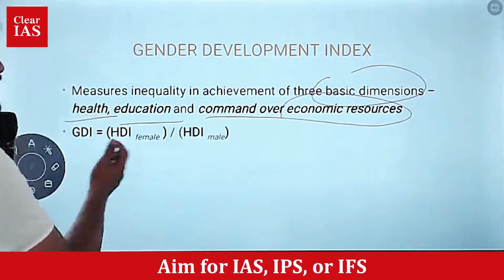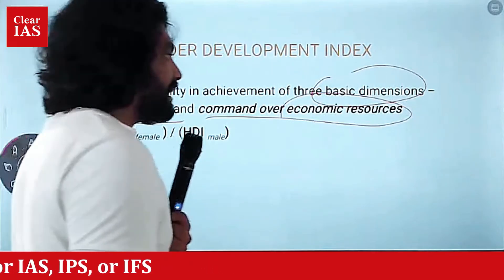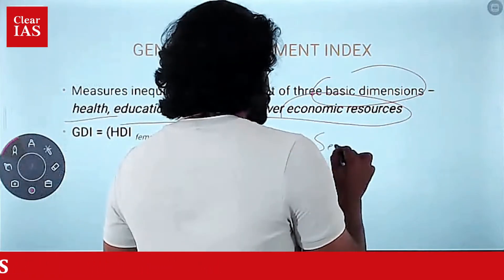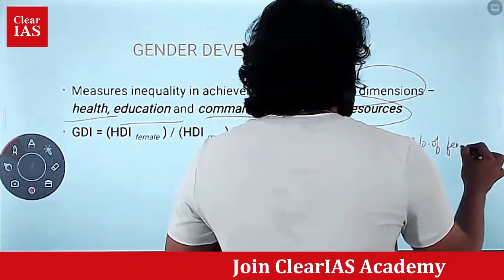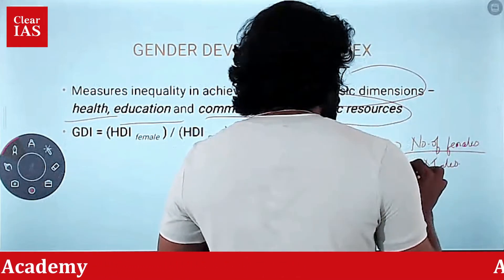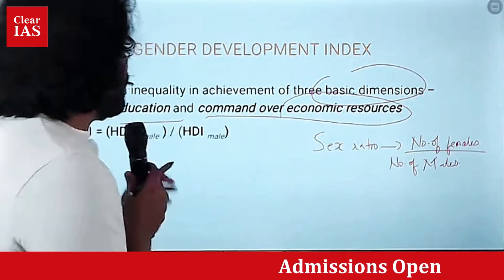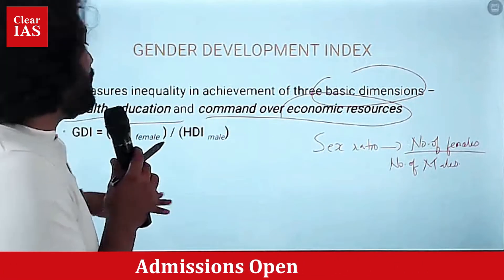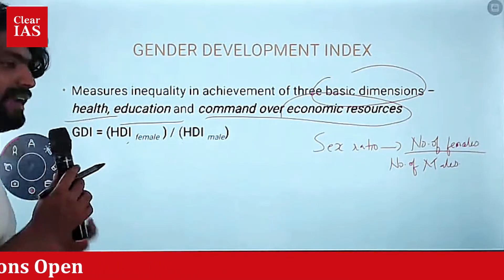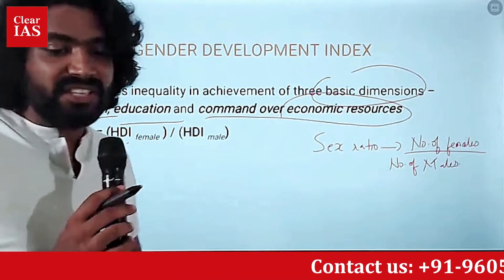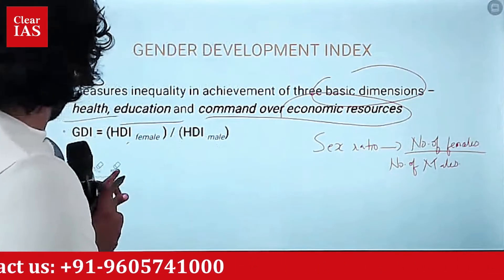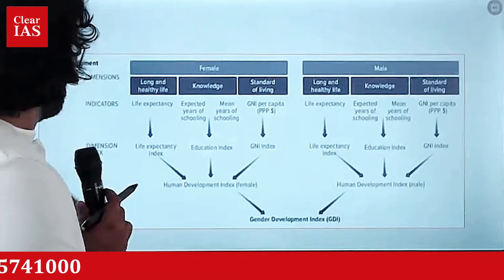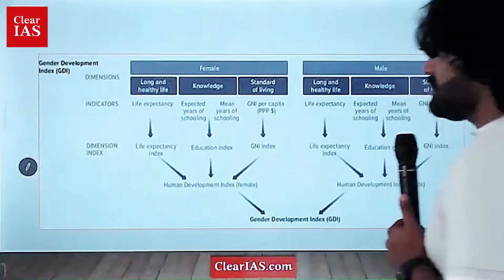GDI is equal to HDI female divided by HDI male — basically just like we consider sex ratio, which is the number of females to males. Similarly, gender development index means HDI female divided by HDI male gives the Gender Development Index, GDI.